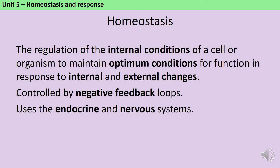As we said in our introductory video, homeostasis is the regulation of the internal conditions of a cell or organism to maintain optimum conditions for function in response to internal and external changes. It's controlled by negative feedback loops, and it makes use of the endocrine and nervous systems.